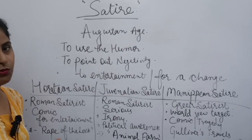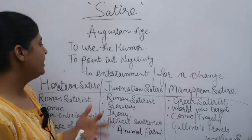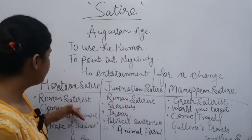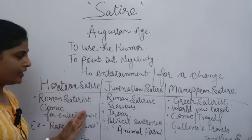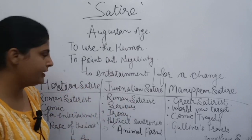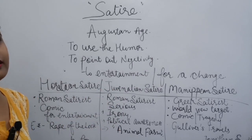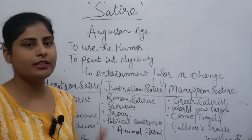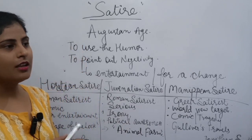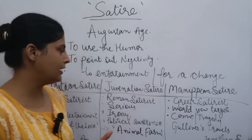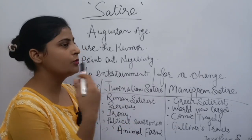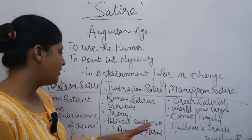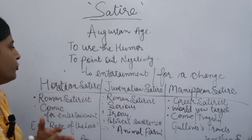For example, Alexander Pope's work 'The Rape of the Lock' is an example of this type. It was written in a comic way and also in a serious, tragic form. It is found in irony and raises political awareness — meaning it calls for change in society. It highlights political policies that were against the welfare of society. This is what Juvenalian satire represents. A very famous example is Animal Farm.